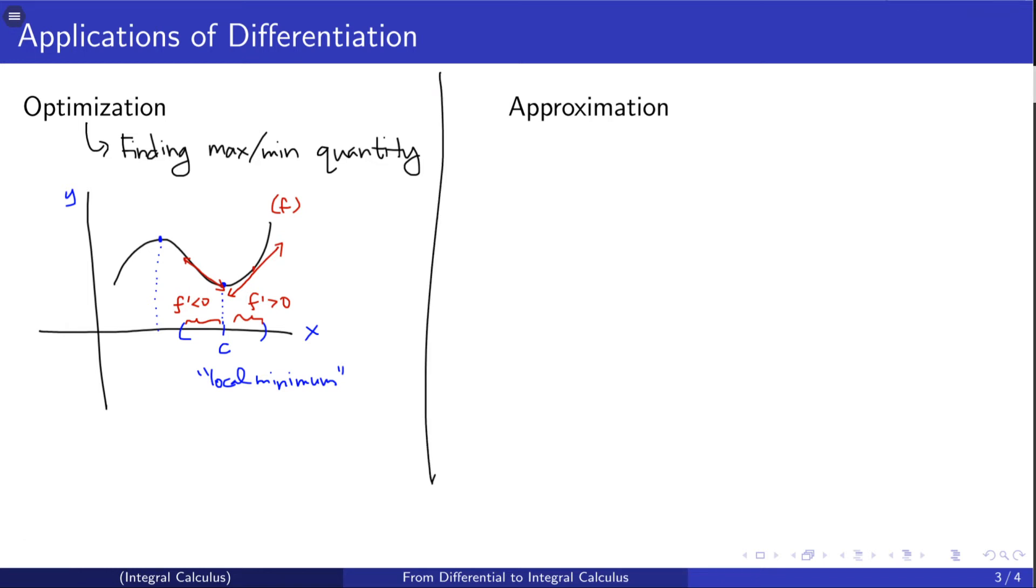Approximation is another nice application that taking derivatives allows us to do. For instance, you may have a curve here. Again, let's assume this is the function y equals f of x. If we knew the equation of the tangent line to y equals f of x at x equals a, well, what's nice about this is tangent lines are lines.